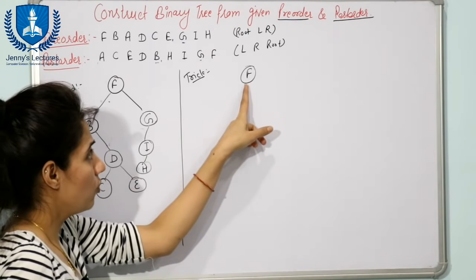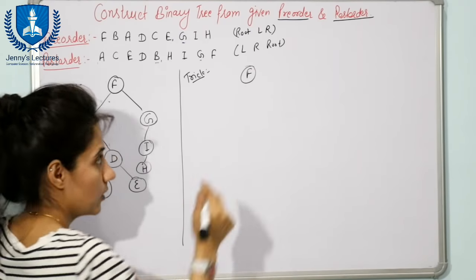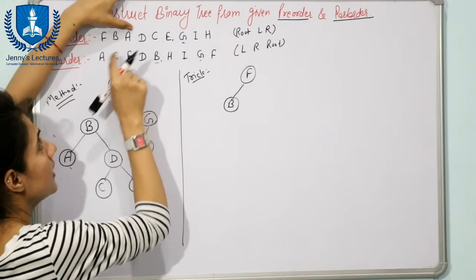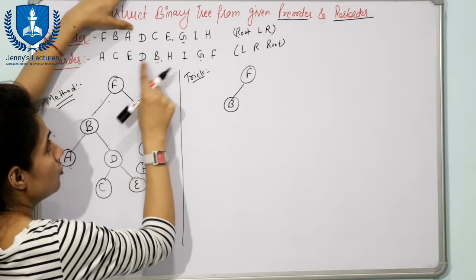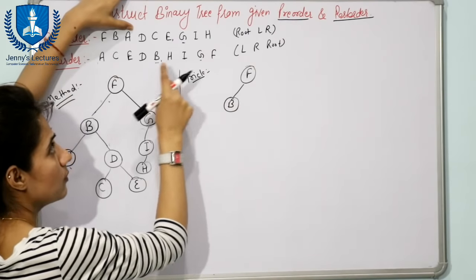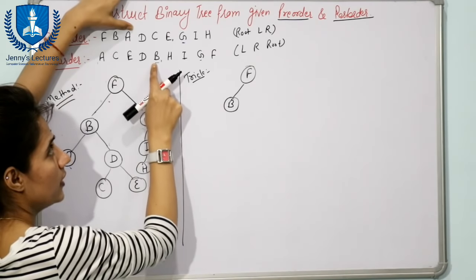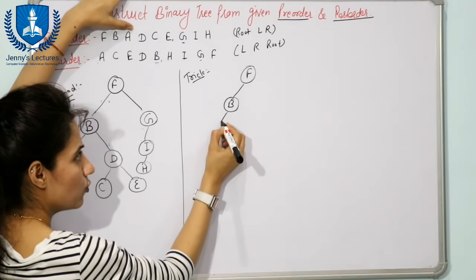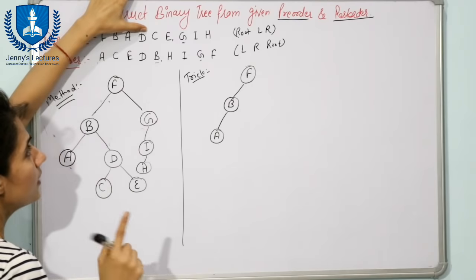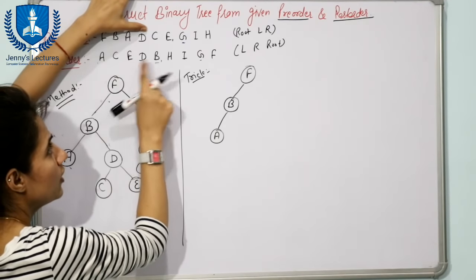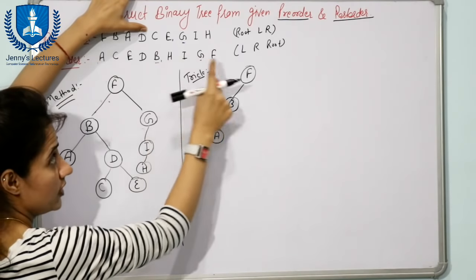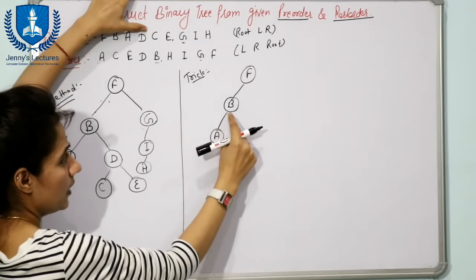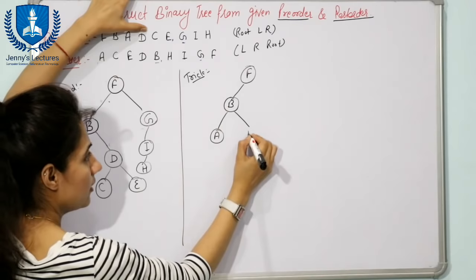Next element in pre-order is A. Find A in post-order - A is to the left of B. We are now working on B, so A is part of B. B has no children yet, so fill left child first: write A. Next element is D. Find D in post-order - D is also to the left of B. So D is part of B, but B already has a left child, so the only remaining place is right child: write D.